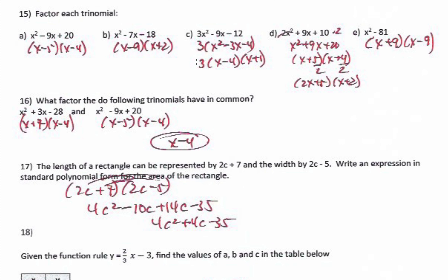In letter d, there's no greatest common factor, so we use plan B: multiply by the lead coefficient 2 on the end, giving x squared plus 9x plus 20. Factoring that gives (x plus 5)(x plus 4). But since I multiplied by 2, I divide back in by 2 — 4 over 2 reduces to 2 — so that's (x plus 2). The 2 comes in front of x, giving (2x plus 5) times (x plus 2).